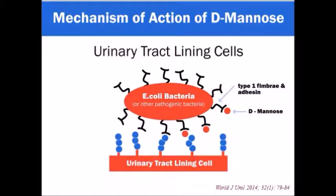The role of D-mannose is very similar to cranberry. The difference is that while proanthocyanidins from cranberry get attached to type P fimbria of bacterial cells, D-mannose gets attached to type 1 fimbria of bacterial cells. Since there are two types of fimbria — type 1 and type P — both are taken care of by D-mannose and cranberry extract's active ingredient proanthocyanidins, respectively.